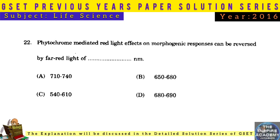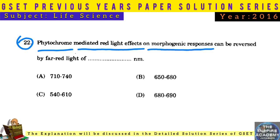Question No. 22: Phytochrome-mediated red light effects on morphogenic responses can be reversed by far-red light of 710 to 740 nanometers.